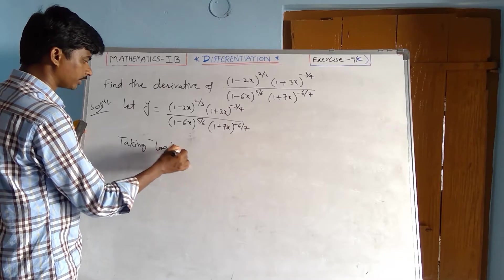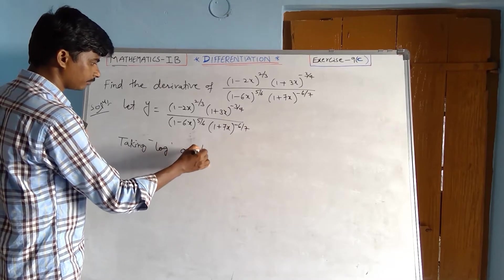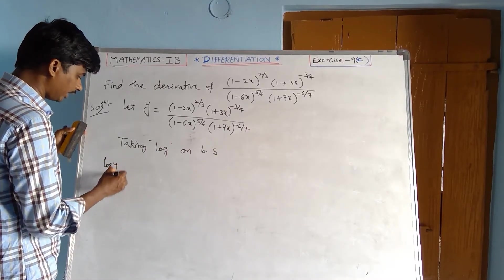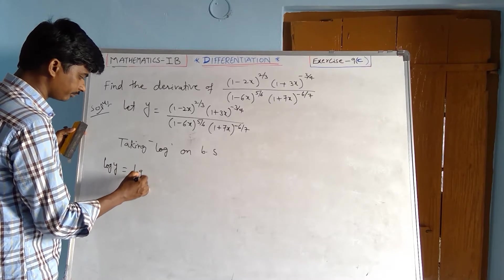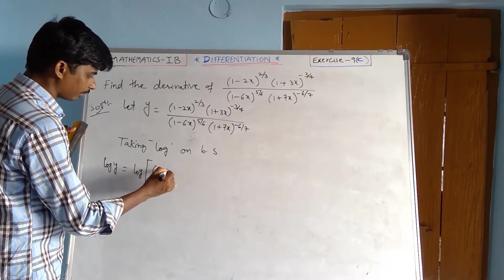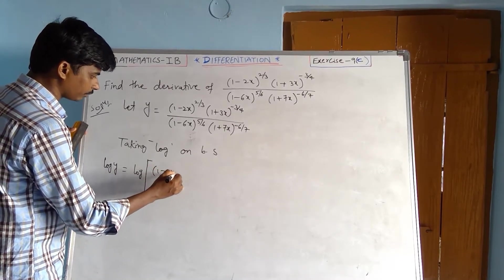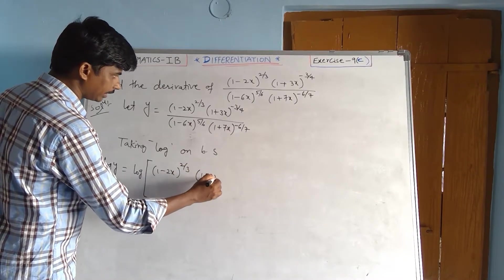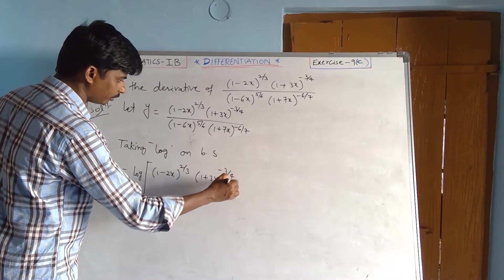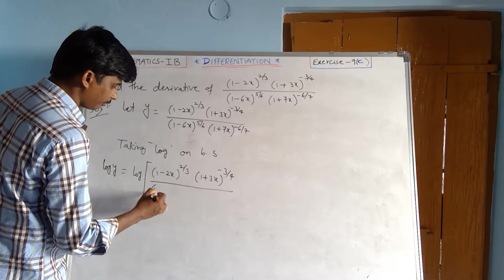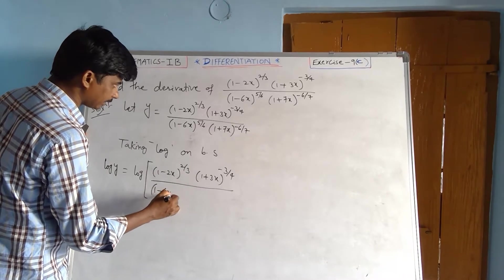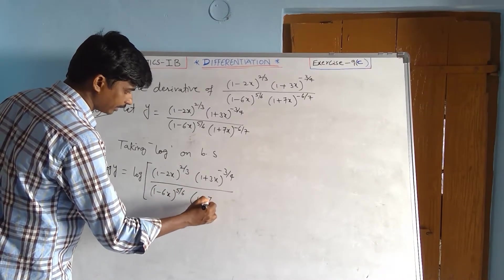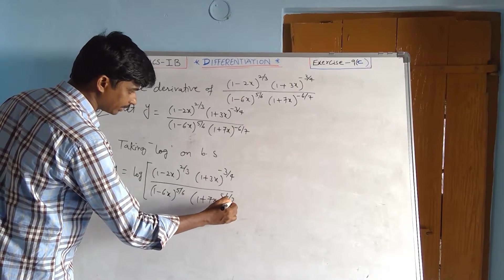Taking log on both sides: log y equal to log of (1 minus 2x) to the power of 2/3, times (1 plus 3x) to the power of minus 3/4, divided by (1 minus 6x) to the power of 5/6, times (1 plus 7x) to the power of minus 6/7.